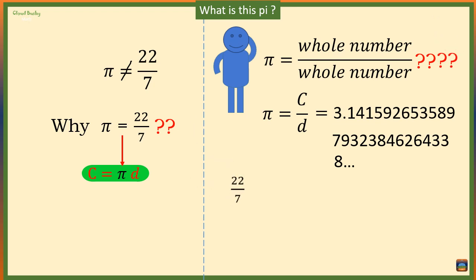Now 22 over 7, although it's not equal to pi, is a favorable simple fraction because it's convenient when doing calculations. So instead of using this endless decimal, we use 22 over 7 which is easy to handle.